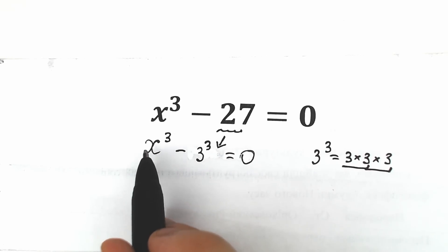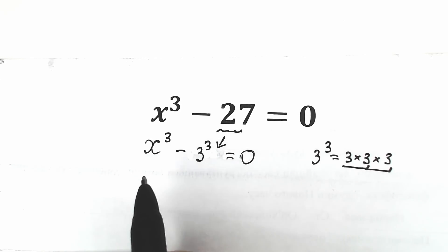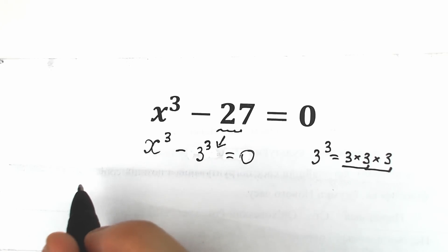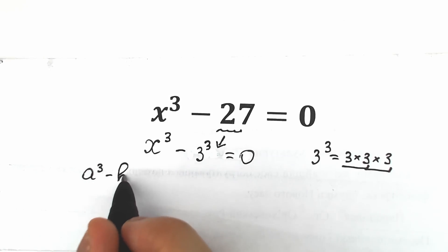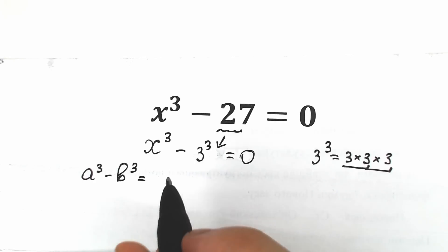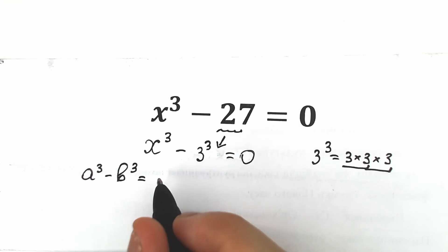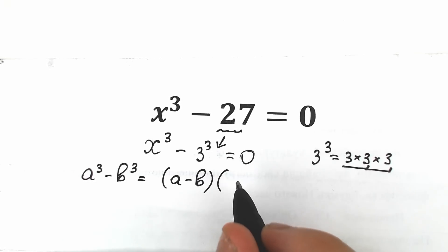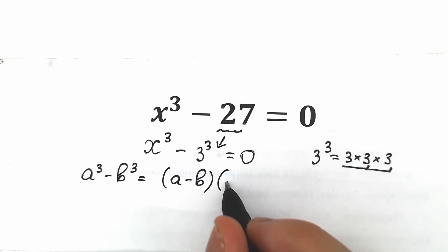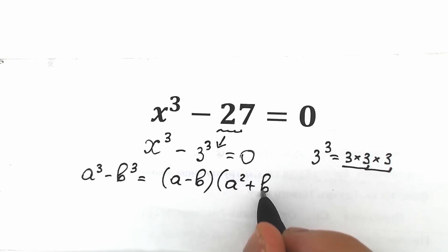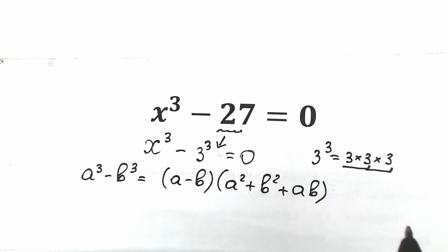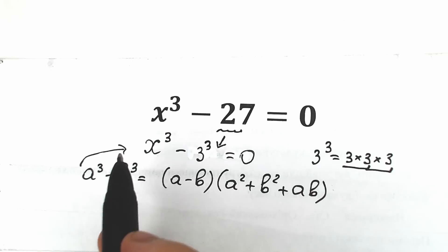Now we have x cubed and 3 cubed — this is a difference of cubes. Let's remember the formula from school: a cubed minus b cubed equals (a minus b) times (a squared plus ab plus b squared). This is our well-known formula, so let's apply it here.